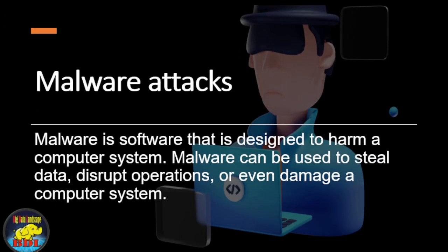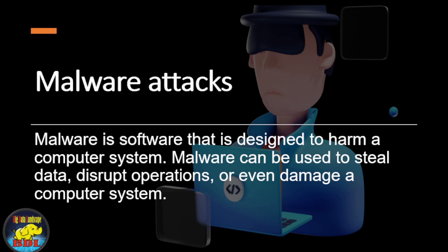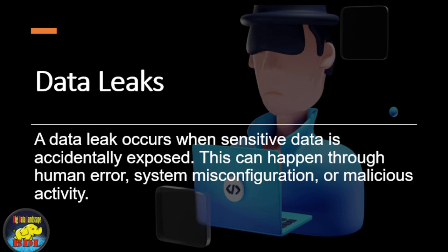Malware attacks are another common trait to big data. Malware is software that is designed to harm a computer system. Malware can be used to steal data, disrupt operations, or even damage a computer system. Data leaks can also be a trait to big data. A data leak occurs when sensitive data is accidentally exposed. This can happen through human error, system misconfiguration, or malicious activity.